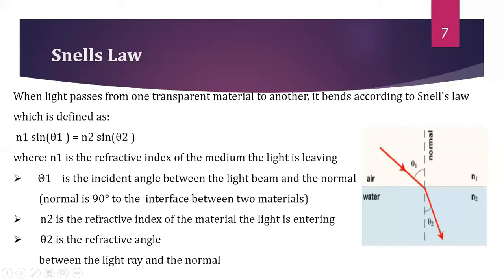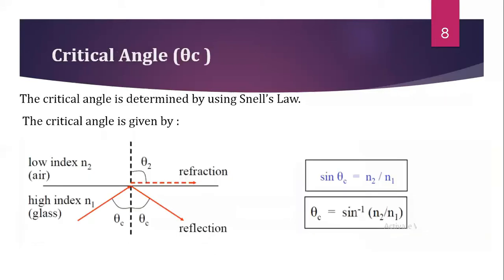Snell's law is mainly used to find the refractive index of an unknown material. The next one is critical angle. When a ray travels from a denser medium to a rarer medium, that is from glass to air where n1 > n2, the angle of refraction is greater than the angle of incidence and the refracted ray moves away from the normal. If the angle of incidence is increased further, the angle of refraction also increases, and at a particular angle of incidence the angle of refraction becomes 90 degrees — this is called the critical angle.